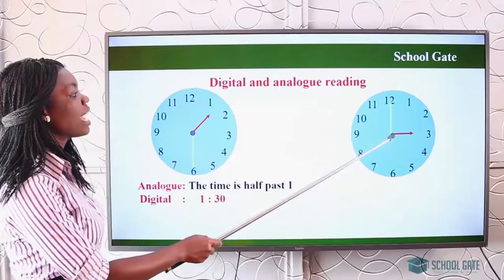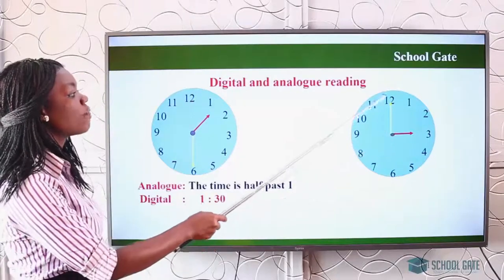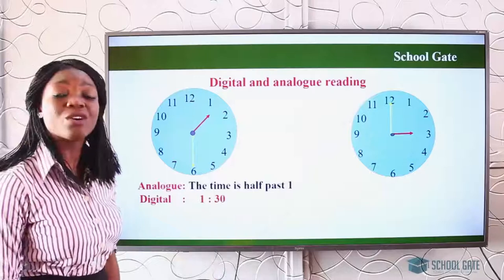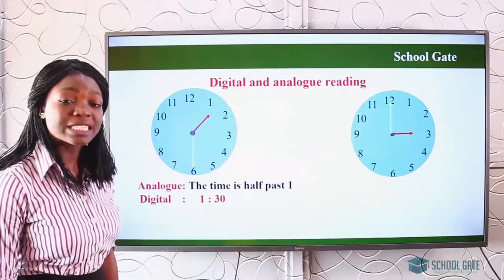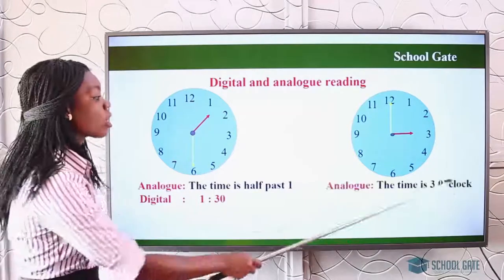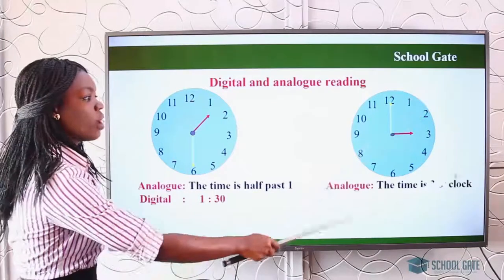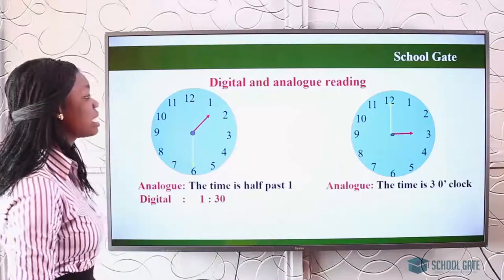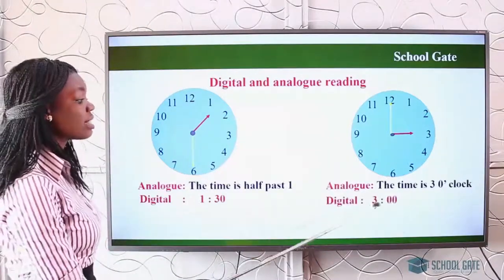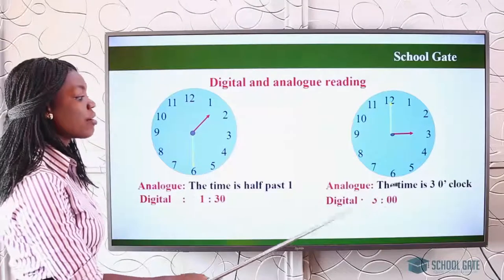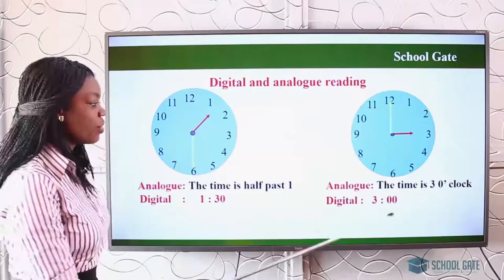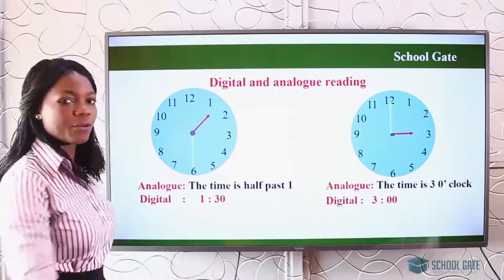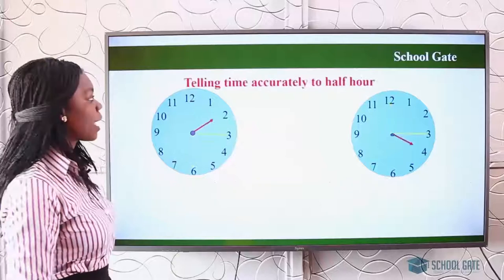See this one: the long hand is on twelve and the short hand is on three. If you want to read it in analog, it is three o'clock. Then if you want to write it in digital, it is written as three, zero, zero — three hundred hours, or 3:00.